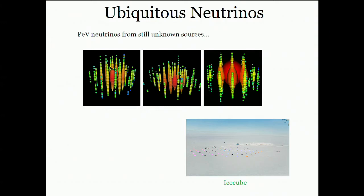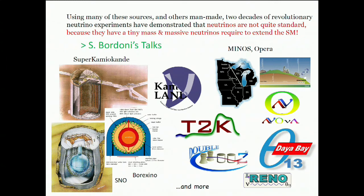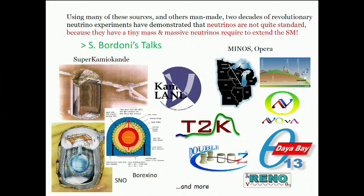Using many of these natural sources and others made in the laboratory, at least two decades of revolutionary neutrino experiments have demonstrated that neutrinos are not quite the standard model particles we thought, because they have a tiny mass. This implies we have to extend in one way or another the standard model. You will be hearing much more about all these beautiful experiments in the following lectures.